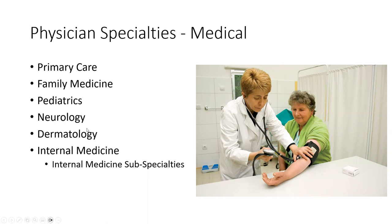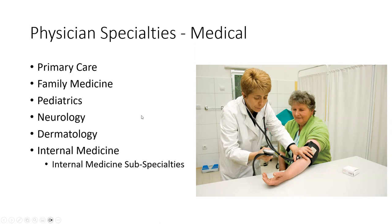Neurology and dermatology are residencies that don't require an internal medicine residency first — you can go directly from medical school to those. Neurology treats the nervous system and dermatology treats the skin, which is technically the largest organ in the human body. Internal medicine is actually the gateway to a whole slew of other medicine subspecialties that require a fellowship. Neurology and dermatology go straight into residency, whereas all other internal medicine subspecialties require medical school, then an internal medicine residency, then a fellowship.